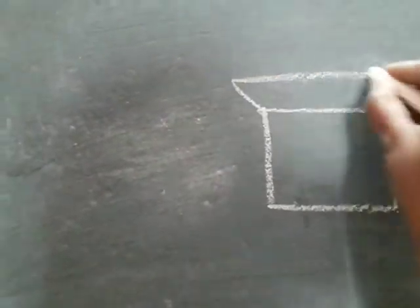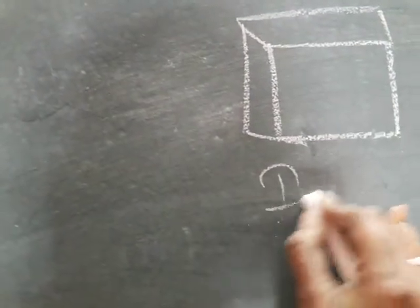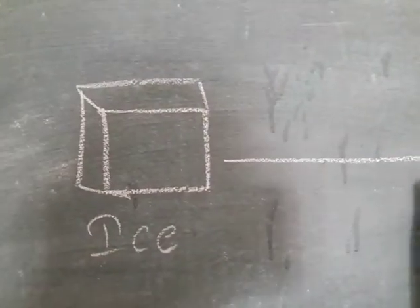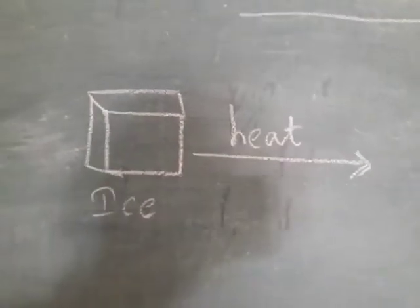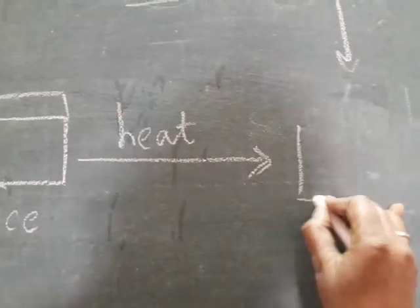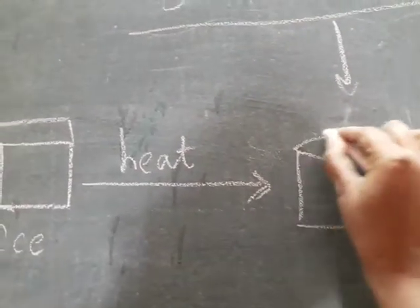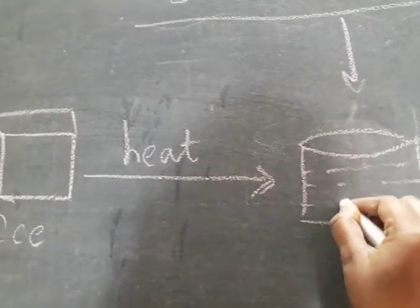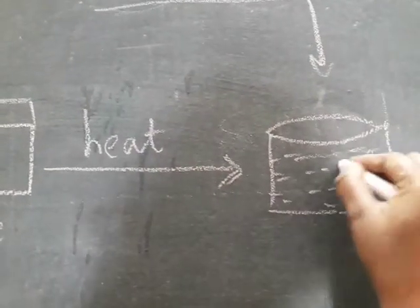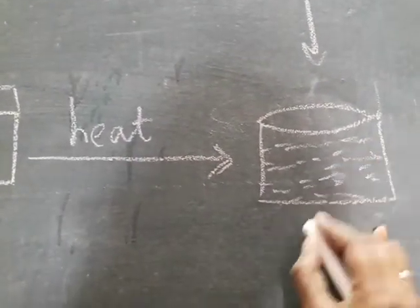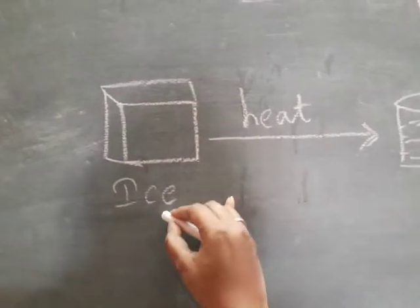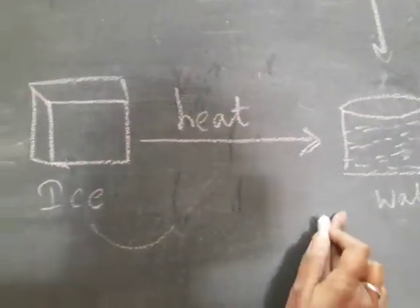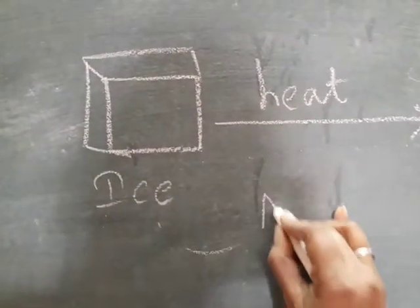It is an ice cube. We heated this ice cube. When we heat the ice cube, it is converted into water. This process is called melting.